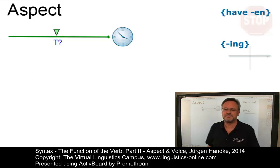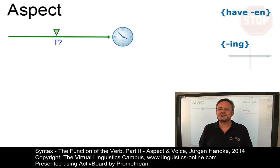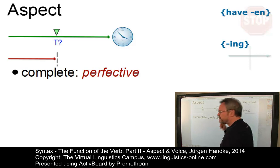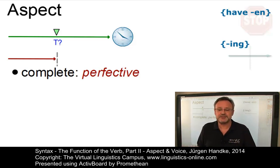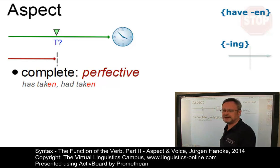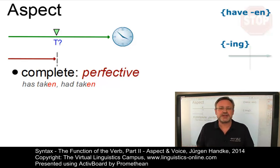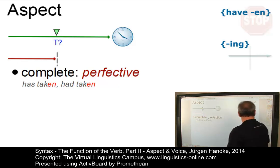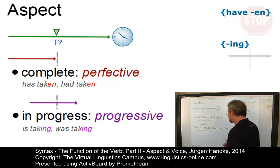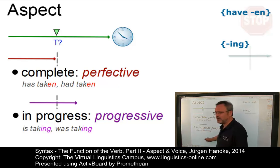So where on the time axis are we? Two aspect constructions can be seen as realizing a basic contrast. One views an action as complete or perfective. In present-day English this perfective aspect is realized in active sentences by means of a complex verb group with a form of have and a past participle, as in has taken or had taken. The second aspect views an action as incomplete — that is, the action is still in progress — and is referred to as the imperfective or progressive aspect. In present-day English it is realized by means of a form of be plus a present participle, as in is taking or was taking.